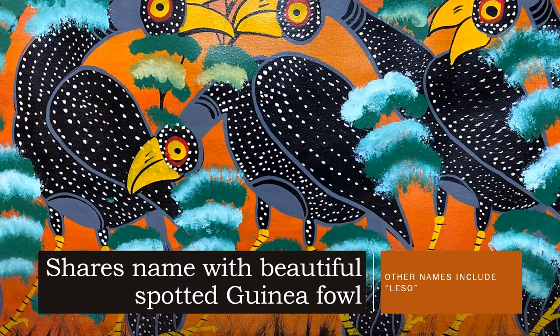Kanga shares its name with a beautiful spotted guinea fowl, which is often seen around some parts of East African countries. In other places, Kanga is also known as leso, so keep that in mind when searching for your pair.